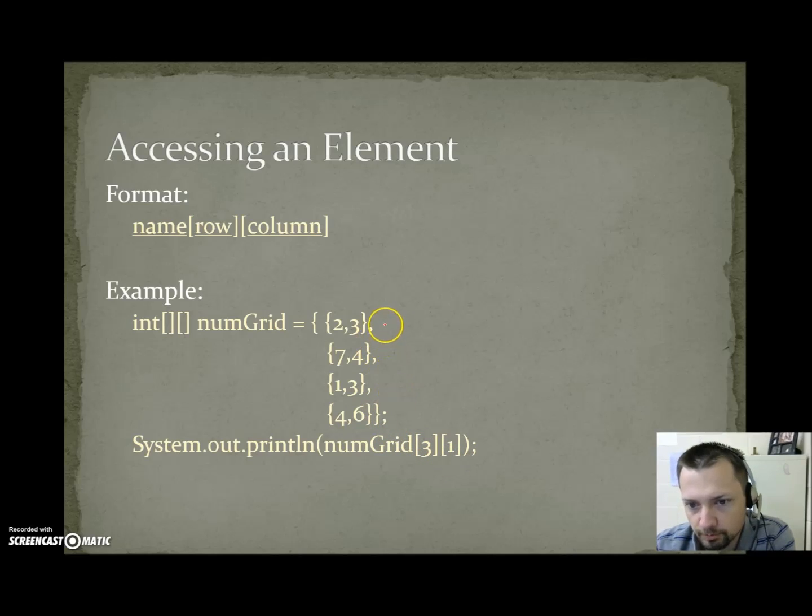So count down to the correct row. 0, 1, 2, 3. And then you count over to the correct column. 0, 1. So 3, 1 would be 0, 1, 2, 3 down, and 1 over, 0, 1. This would give us the value 6.